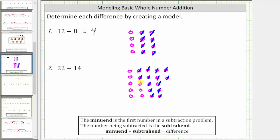leaving us with 5, 6, 7, 8 circles, which is the difference. 22 minus 14 equals 8.